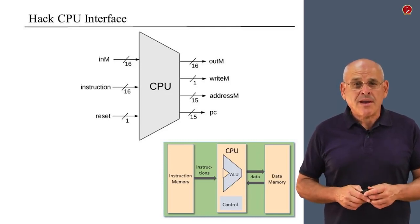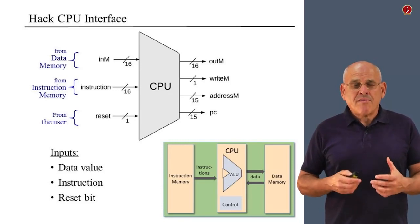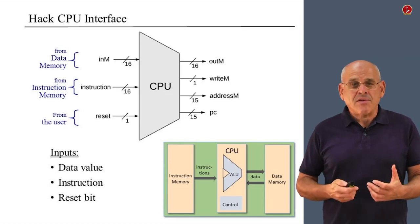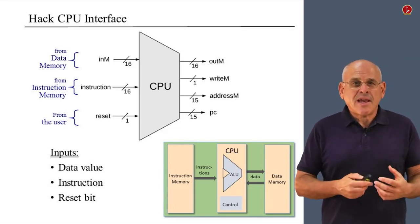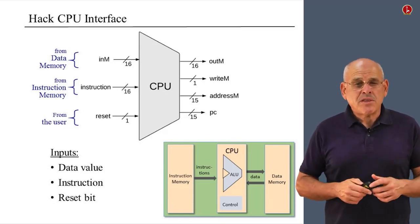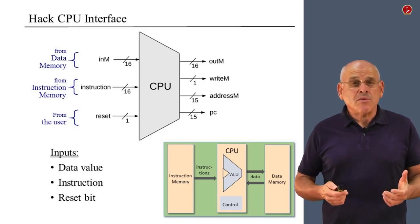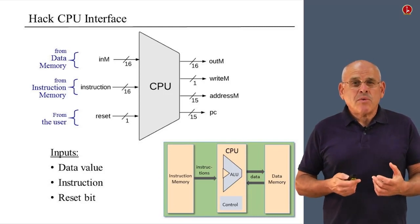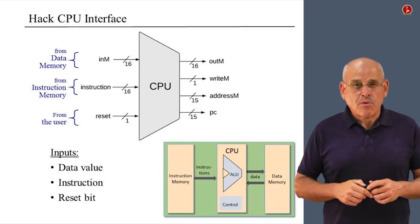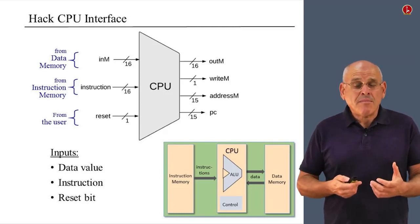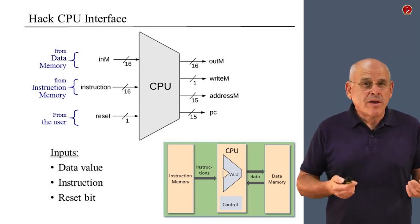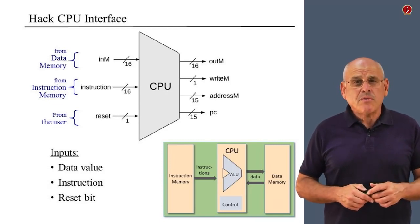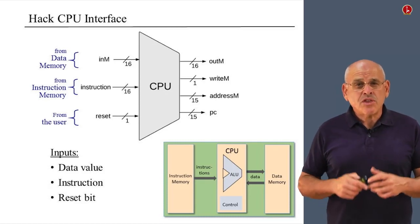Here are the specific input and output connections of the CPU, reviewed from left to right and top to bottom. There are three inputs from three completely different sources. First, there is the 16-bit data value — the value of the currently selected data memory register, which is what the CPU is going to operate on. Second, the input called 'instruction' is a 16-bit value representing the selected instruction memory register. Third, the input called 'reset' is a one-bit input, discussed later.